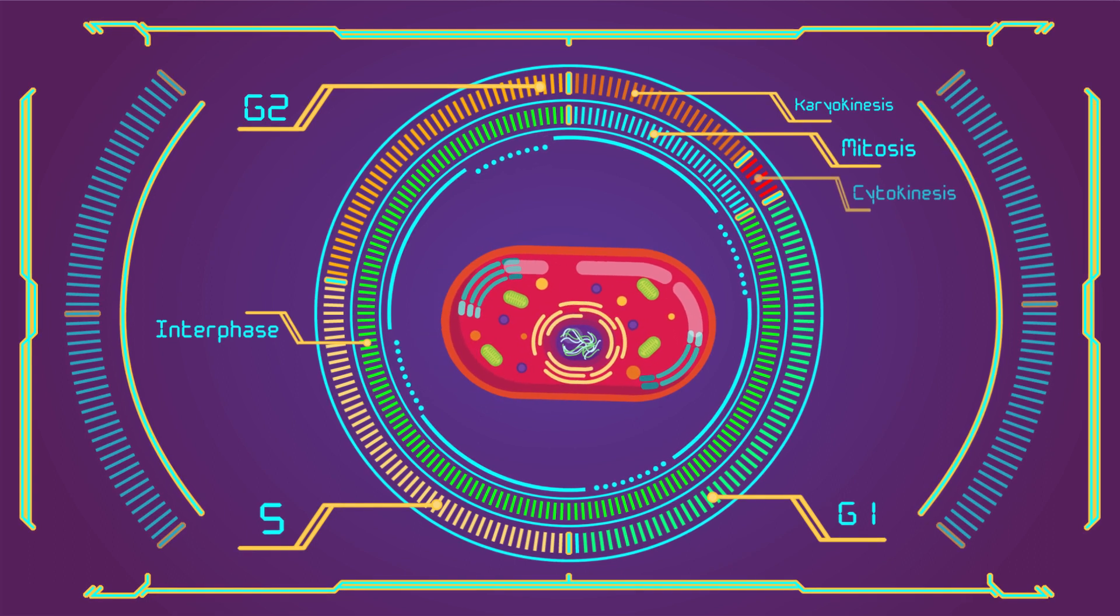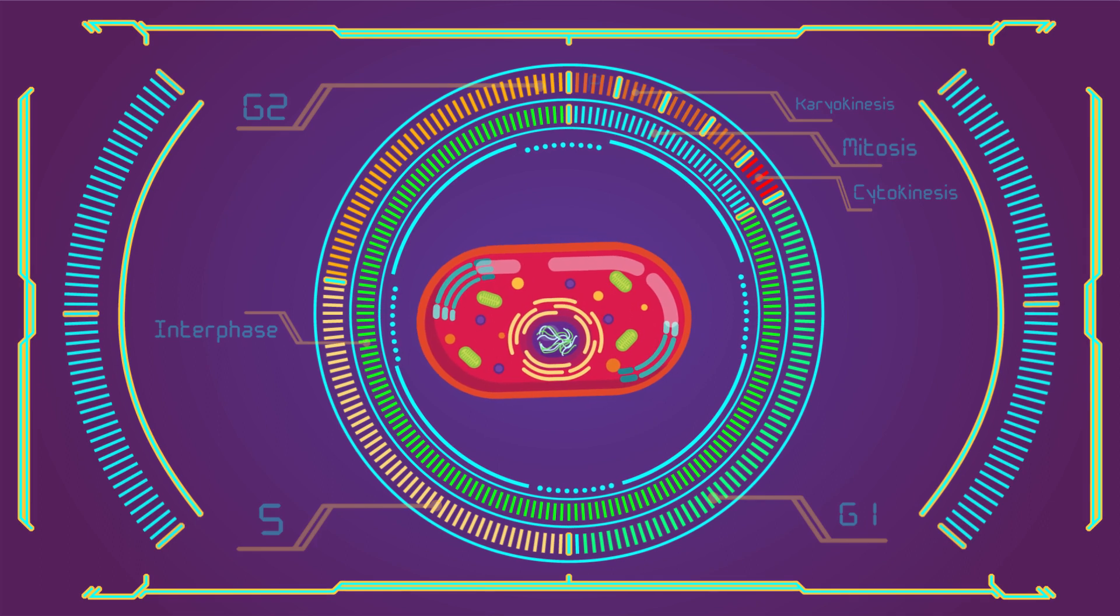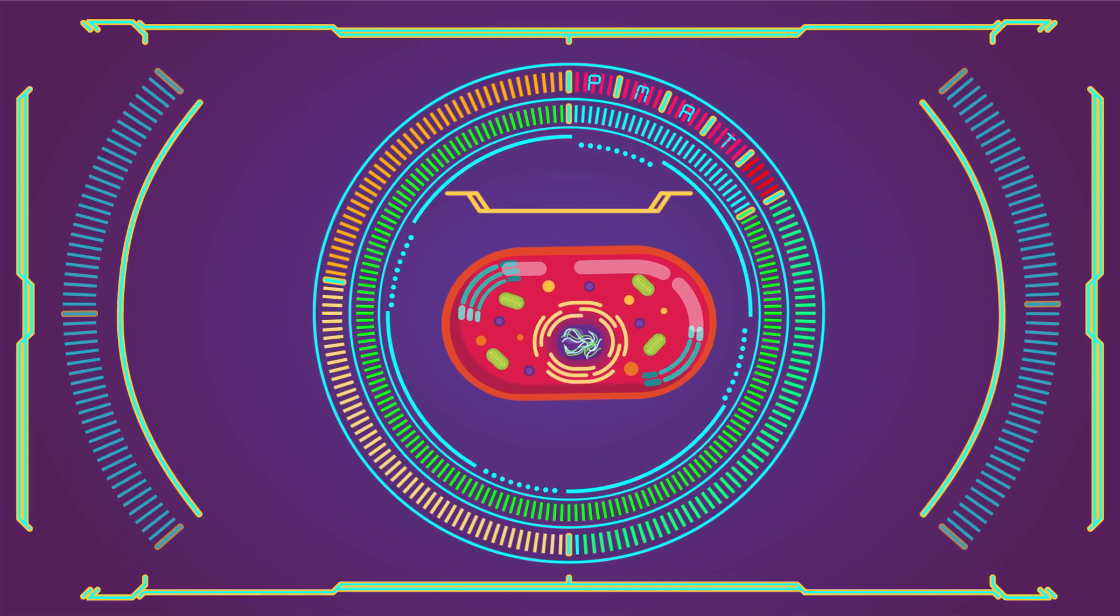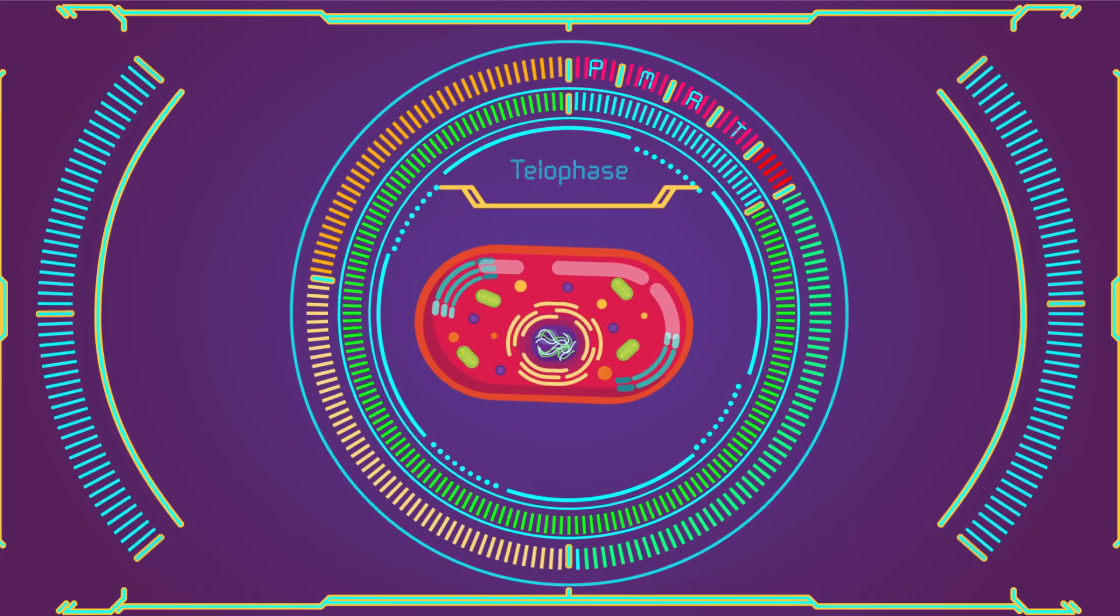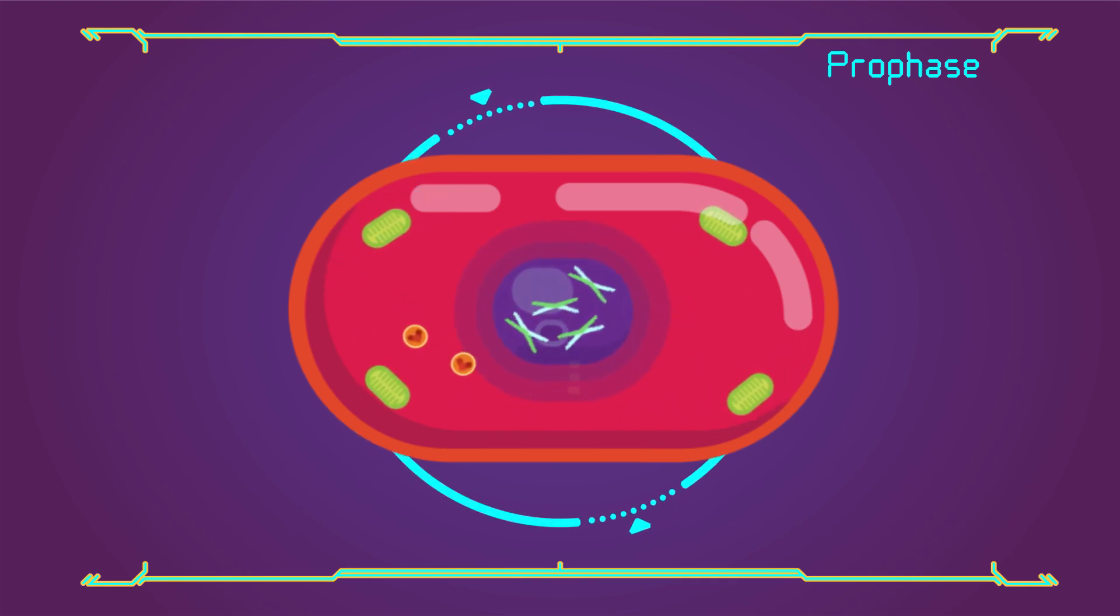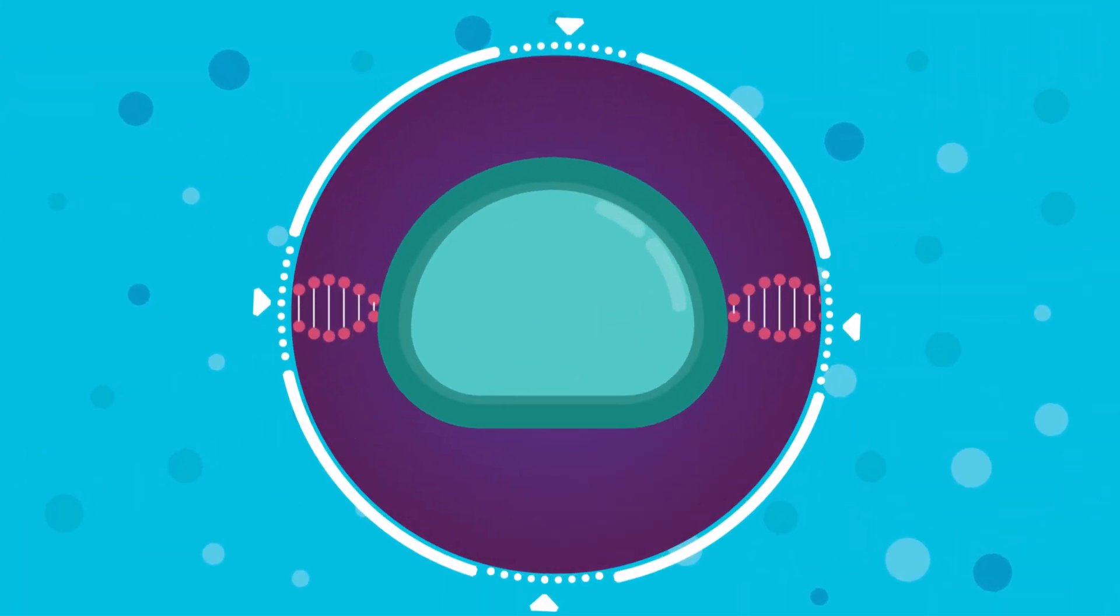Here we start with prophase. The chromosomes start coiling and become condensed. Nuclear envelope disintegrates. Gene transcription ceases during prophase and does not resume until late anaphase to early G1 phase. The nucleolus also disappears during early prophase.